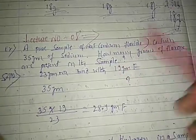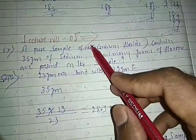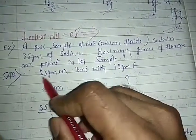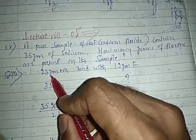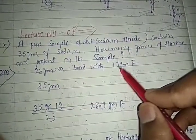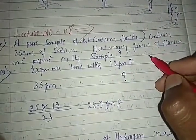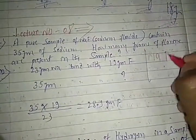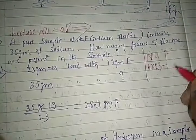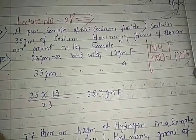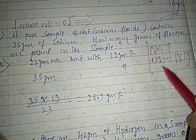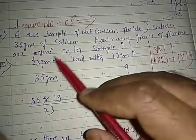In sodium fluoride, 23 grams of sodium — that is, one mole of sodium with atomic mass 23 — is bonded with 19 grams of fluorine. The atomic mass of fluorine is 19. So 23 grams of sodium is bonded with 19 grams of fluorine.